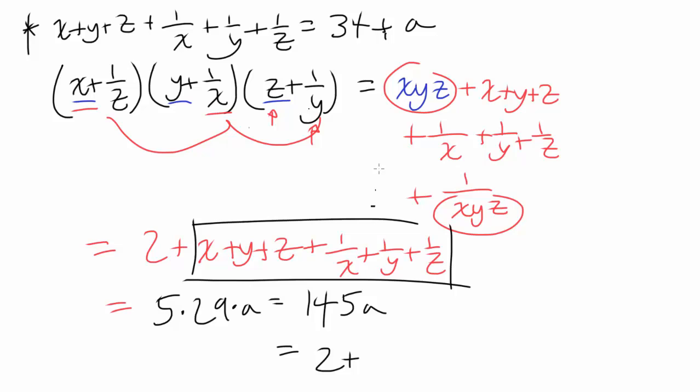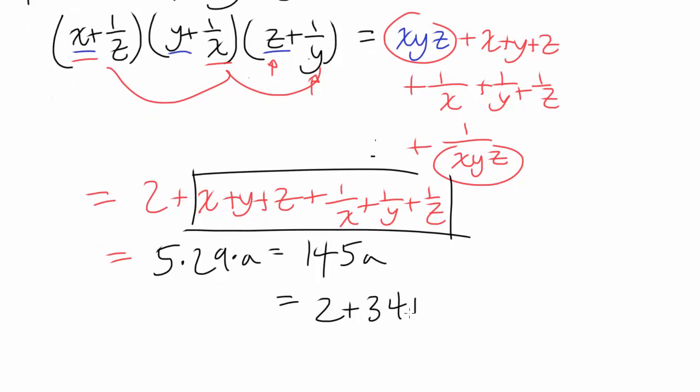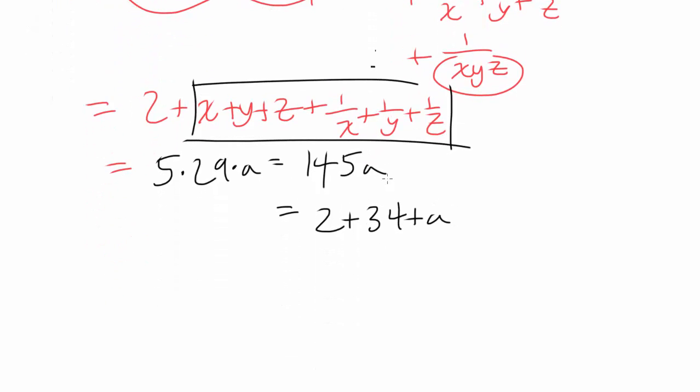So we have 2 plus 34 plus a. Okay. This is going pretty well. You have 145a is 2 plus 34 plus a, which is 36 plus a. So we have 144a is equal to 36. Or a is equal to 36 divided by 144.